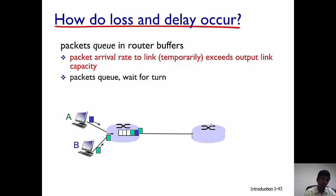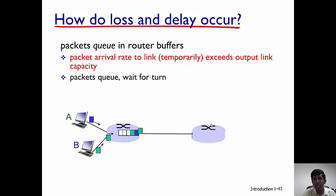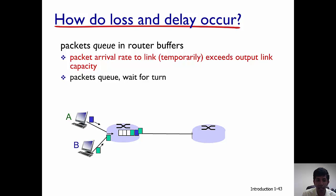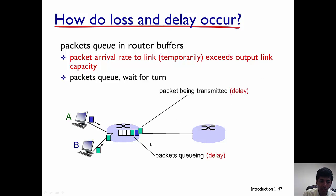At each of these routers the packet can get queued in the router buffer. When the packet arrival rate to a link temporarily exceeds the output link capacity, the packets have to wait and will experience queuing and hence delays. In this example, the green packet is being transmitted and as a result the blue and the other green packet are waiting in a queue, experiencing some amount of queuing delay.